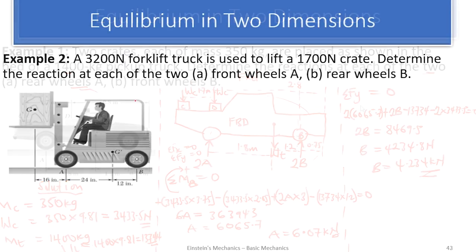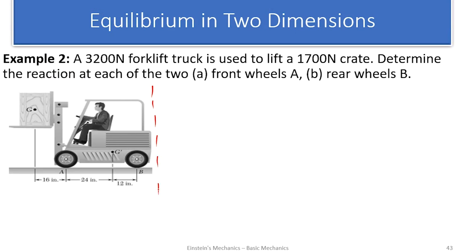Let's move to Example 2. A 3200 N forklift truck is used to lift a 1700 N crate. Determine the reaction at each of the two front wheels A and the rear wheels B. This is similar to Example 1 but with different dimensions and arrangement — and the weights are already given in newtons, not mass.